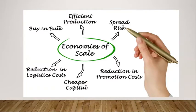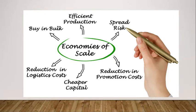These are the components of economies of scale. Number one is to spread the risk — having a business risk is inevitable, and we should know how to spread it so it will not burden the company. Next is reduction in promotion costs — with economies of scale, we can reduce production or promotion costs. Next, we have cheaper capital. Also, reduction in logistic costs. With economies of scale, we can buy in bulk and save. And finally, efficient production — how fast is the production of the business products.